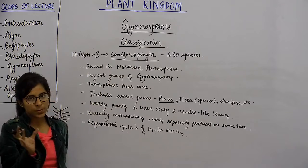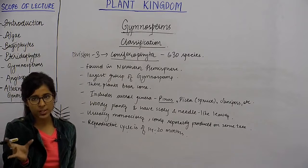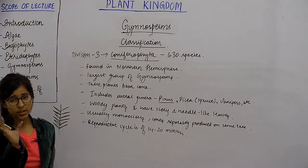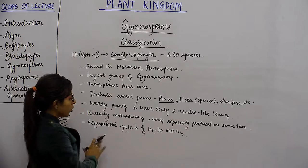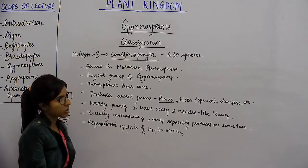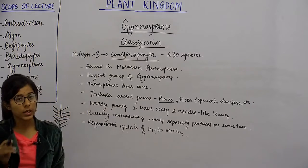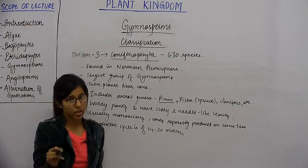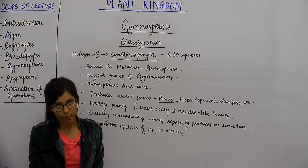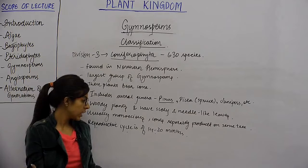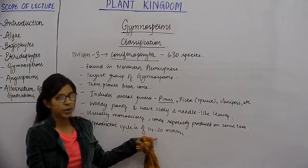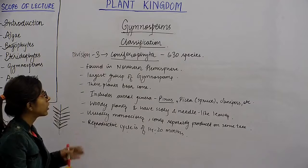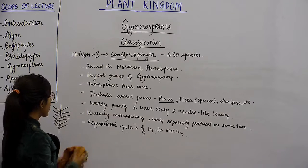Coniferophyta is a special division in which the reproductive cycle is very long — 14 to 20 months. Pollination, fertilization, and seed development do not happen quickly. Therefore, they have a very long reproductive cycle. This concludes the discussion of the third division, Coniferophyta.